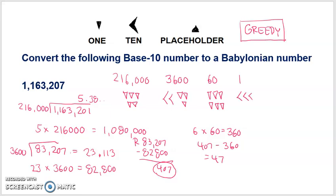One, four tens, seven ones. Oh, that would be wrong. We don't have a placeholder there. Excuse me. So, one, two, three, four, five, six, seven. That says that our base 10 number as a Babylonian number would be represented by five 216,000s, 23, 3600s, 6 60s, and 47.